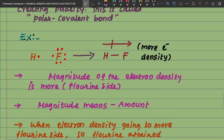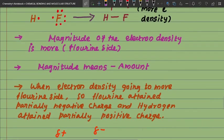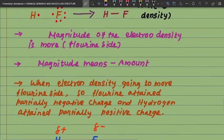In hydrogen fluoride, the hydrogen side has less electron density and the fluorine side has more electron density. The magnitude of electron density is more on the fluorine side, but very less on the hydrogen side. Magnitude means the amount of electron density. When electron density moves toward the fluorine side, fluorine attains a partially negative charge and hydrogen attains a partially positive charge.